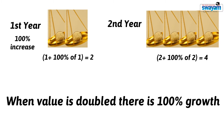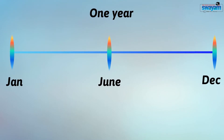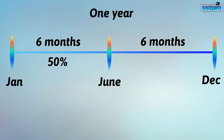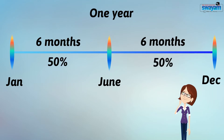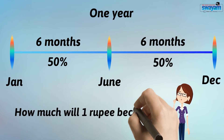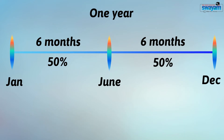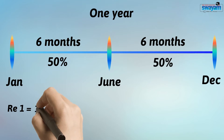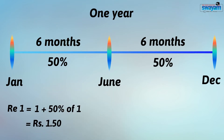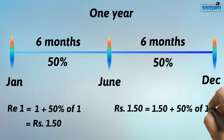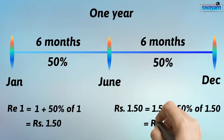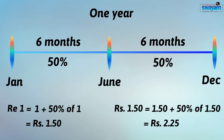This is actually not the case. Now let us divide a year into 2 parts and distribute the 100 percent growth into 50 percent for each 6-month period. What will be the value of 1 rupee after 1 year? After 6 months, 1 rupee will become 1 plus 50 percent of 1, that is 1.50. In the next 6 months, 1.50 rupees will become 1.50 plus 50 percent of 1.50, that is 2.25.